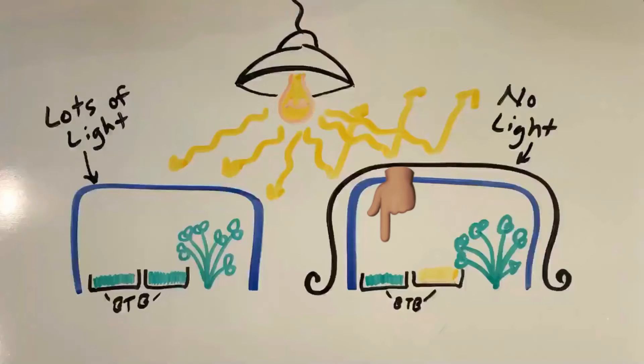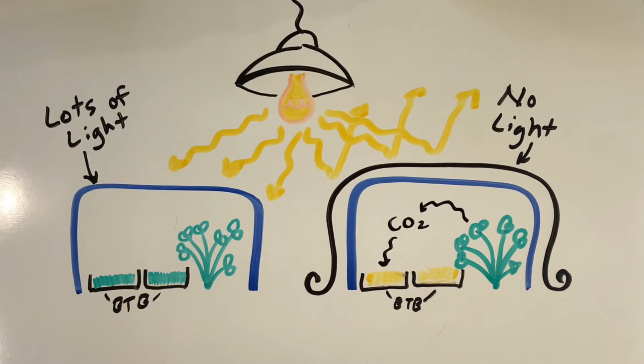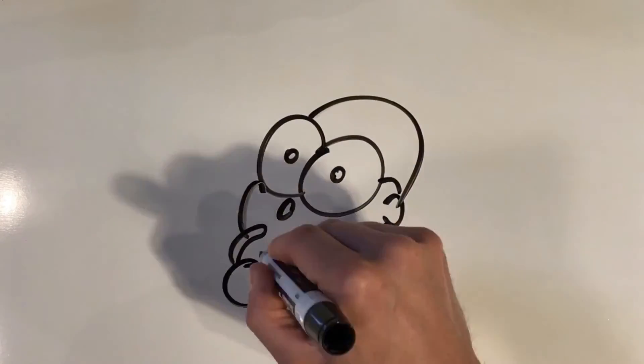The BTB in the dark changed from greenish to yellow. This indicates that CO2 entered the BTB. Following the same logic, this suggests that the plants in the dark were producing CO2, which turned the BTB yellow. So what does this really mean about plants?